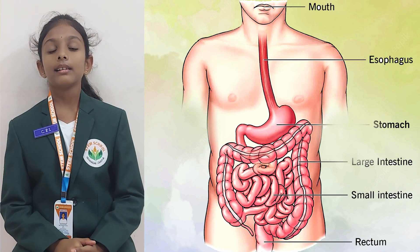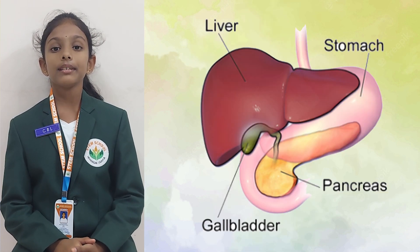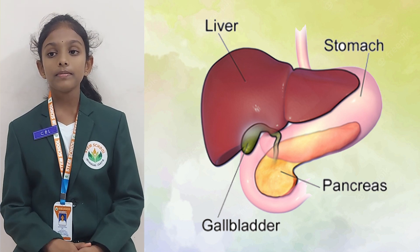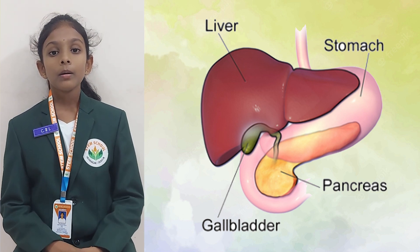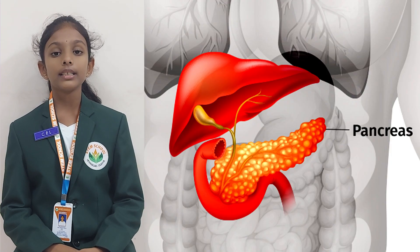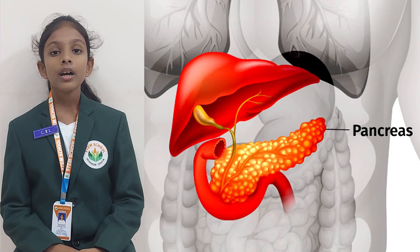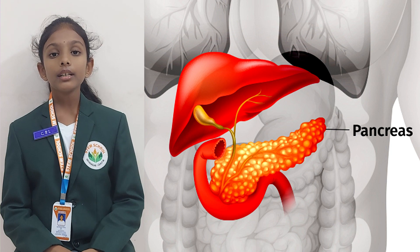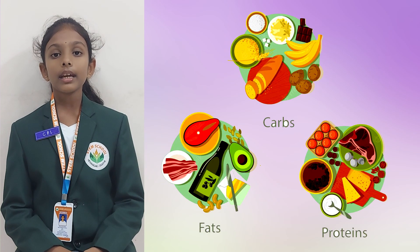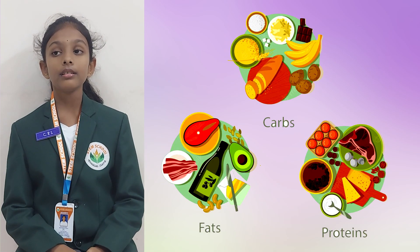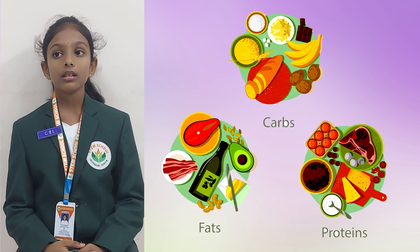Liver and pancreas. The liver is a digestive gland which produces bile juice, which helps in the digestion of fats. The pancreas is also a digestive gland which produces digestive enzymes. It helps in the breaking down of carbohydrates, fats, and proteins.